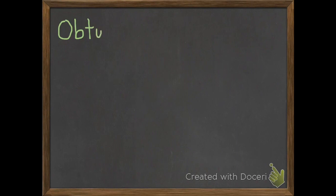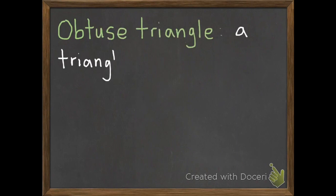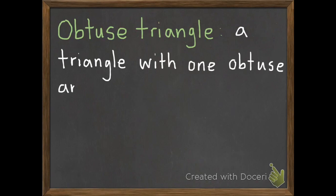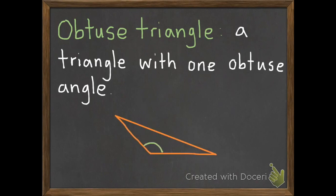Second, we have obtuse triangle. An obtuse triangle is a triangle with one obtuse angle. Here's a picture for that one. There's the one obtuse angle, and then once again we have two acute angles — so one obtuse, two acute.